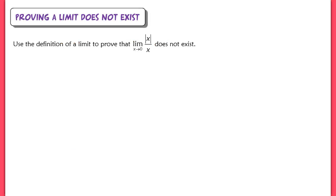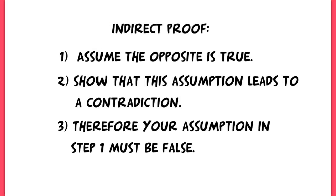In our final example, we will prove that a limit does not exist by showing it does not satisfy our definition. We want to prove that the limit as x approaches 0 of the absolute value of x divided by x does not exist. We'll use a technique called an indirect proof: we assume the opposite of what we believe to be true, then show that assumption leads to a contradiction, meaning the original assumption must be false.